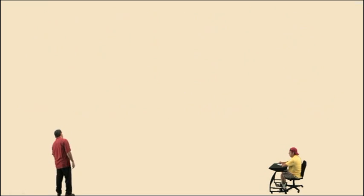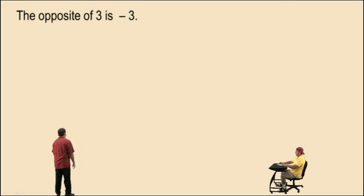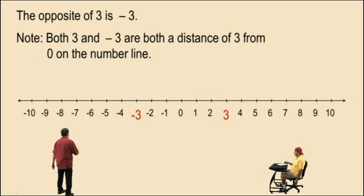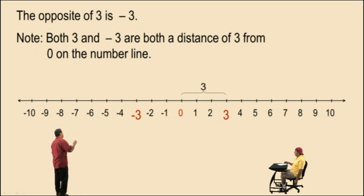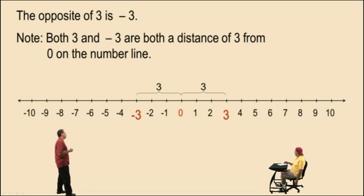Now let's talk about the opposite of a number. The opposite of 3 is negative 3. Note that both 3 and negative 3 are both a distance of 3 from 0 on the number line. Positive 3 is 3 units to the right; negative 3 is 3 units to the left. So 3 and negative 3 are considered to be opposites of each other.